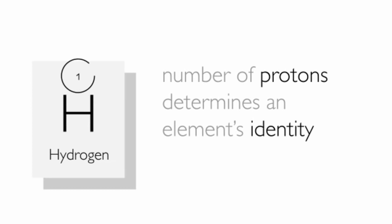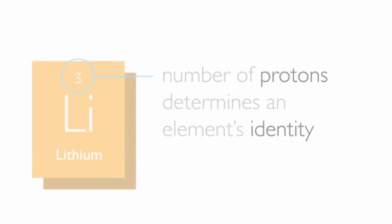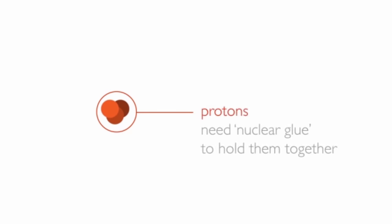The identity and chemical properties of any atom are determined by the numbers of protons in its nucleus. As atoms get bigger and heavier, the nuclei get bigger and heavier, and the protons need a sort of nuclear glue to help hold them together.